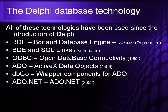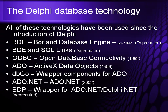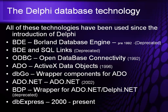ADO.net doesn't stand for anything except ADO.net. And then we have BDP, which stands for Borland Data Provider — it's a wrapper for ADO.net and Delphi.net, and it's also been deprecated. And finally, we have DBExpress, introduced in 2000 and still available today.